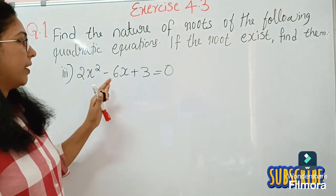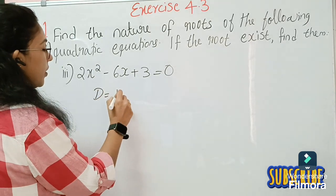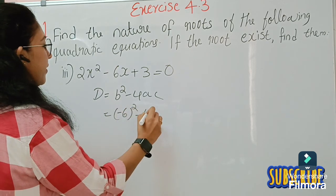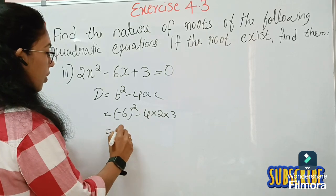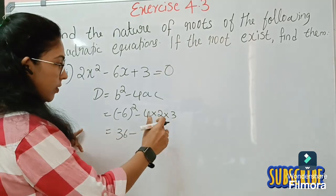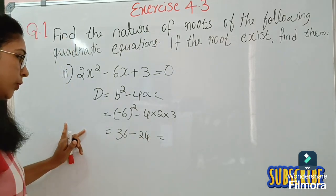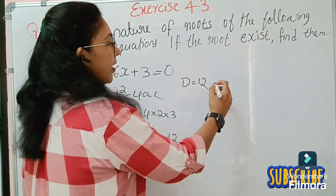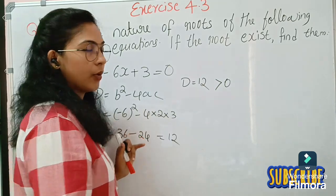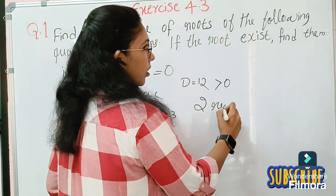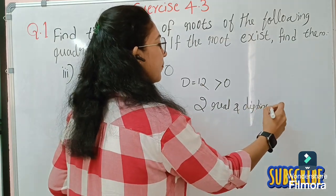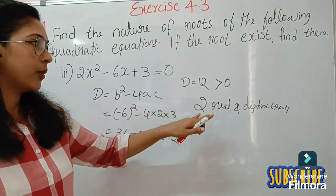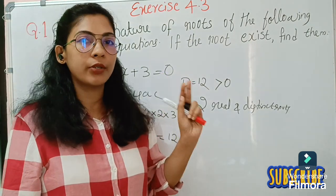The third equation is 2x² minus 6x plus 3 equals 0. The discriminant D = B² minus 4ac = (−6)² minus 4 times 2 times 3 = 36 minus 24 = 12. Since D = 12 is greater than 0, we conclude that two real and distinct roots exist.